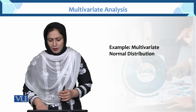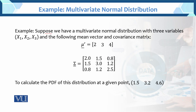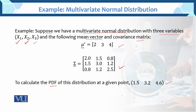This is the example of the multivariate normal distribution. Here, we suppose we have the multivariate normal distribution with three variables: x1, x2, and x3. The following mean vector and covariance matrix are given. We have mu (mean) given and sigma (variance-covariance matrix) given. We need to calculate the PDF of this distribution at the given point: 1.5, 3.2, and 4.6.